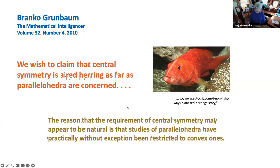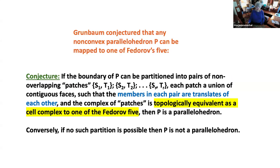Grünbaum conjectured that non-convex parallelohedra are similar in a certain sense to Fedorov's five — that if the boundary of the polyhedron can be partitioned into pairs of non-overlapping patches S1, T1, S2, T2, and so forth through SR, TR, each patch a union of continuous faces such that the members of each pair are translates of each other, and the complex of patches is topologically equivalent as a cell complex to one of Fedorov's five, then P is a parallelohedron. Conversely, if no such partition is possible, then P is not a parallelohedron. As far as I know, this has never been proved. But if anybody knows of a proof, please tell me.